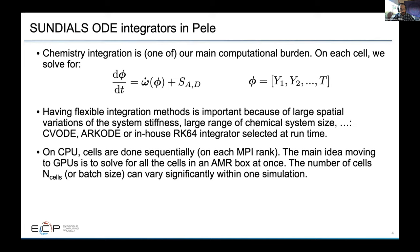We need a relatively flexible integration method because we have large disparities in stiffness. Chemical systems range from 10 to 150 species, so we use both CVODE and ARKode from Sundials, as well as an in-house Runge-Kutta 6/4 method for some cases. On CPU, we were doing each cell sequentially per MPI rank. The main idea when switching to GPUs is to solve each cell in an AMREX box all at once — packing them up and solving simultaneously.